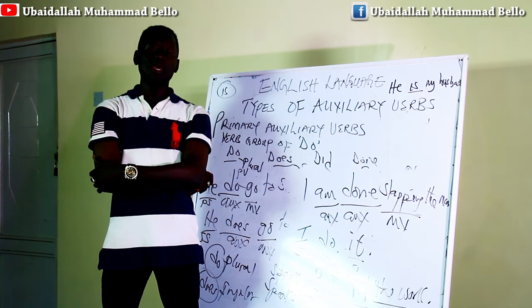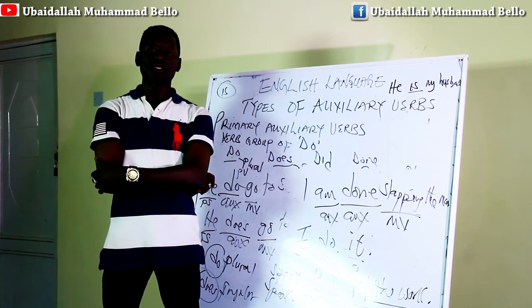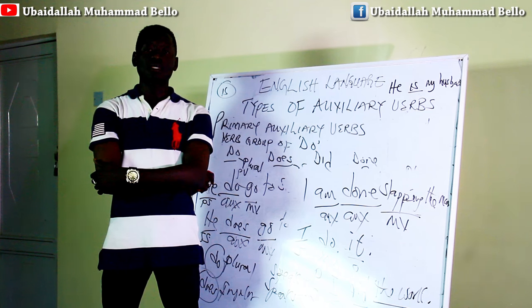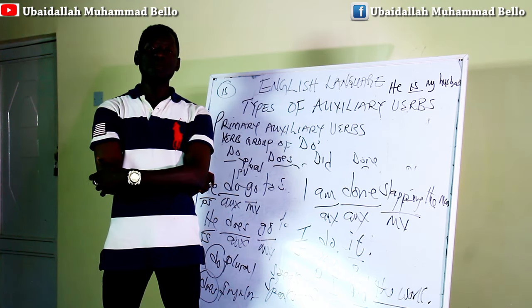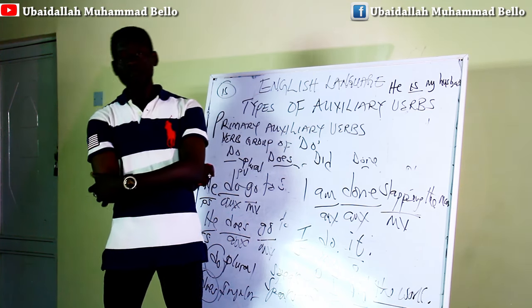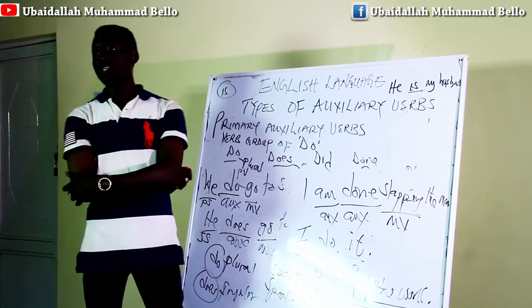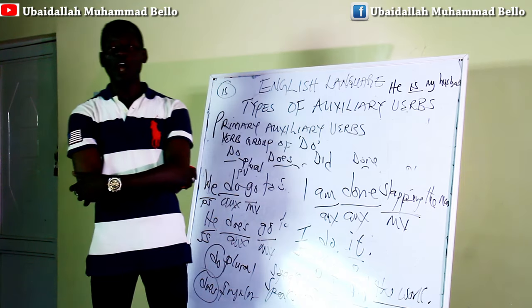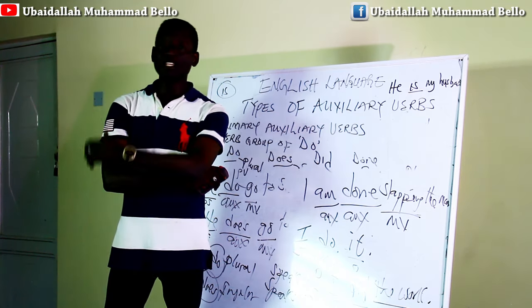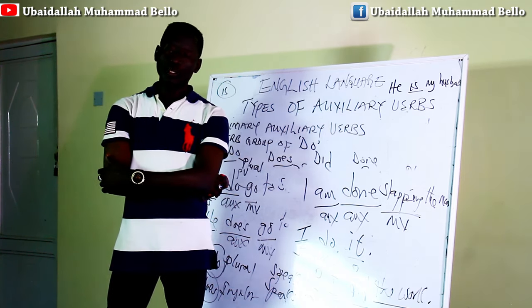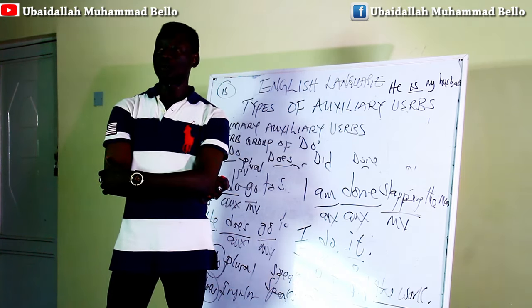As students or learners of English, do not conclude that anytime you see these forms they are auxiliaries — context can grant them the name main verbs. Let's now look at the last group, which is the verb group of 'have.' You can join me so we continue.